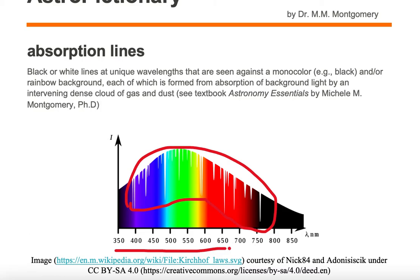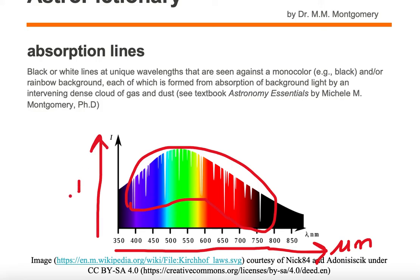Wavelength increases to the right along the x-axis and is in units of micrometers. Intensity is on the vertical axis, increasing upwards. As we can see, there is more green light being emitted than blue light or purple light.